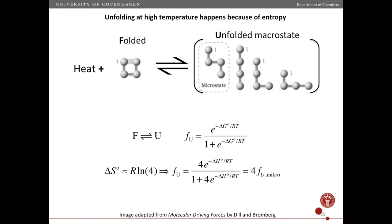What I want to tell you about now is that this unfolding happens because of the higher entropy of the unfolded state. Here I have an even simpler, even smaller model of a protein. The equilibrium between the folded and unfolded state is given by the standard free energy difference between the two. If we approximate the standard entropy contribution to the standard free energy change as simply the conformational entropy, then that entropy change is R ln of the degeneracy of the unfolded state relative to the degeneracy of the folded state. So here it's four — there are four ways of making an unfolded state, and one way of making a folded state, and the natural log of one is zero.